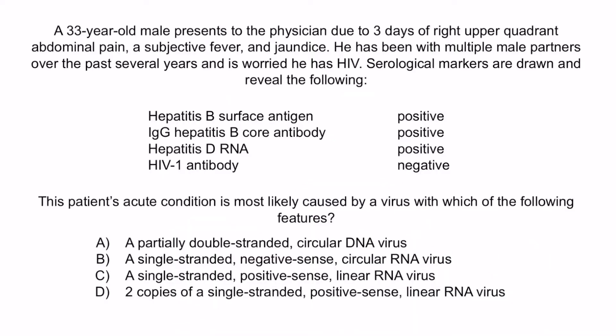A is true of hepatitis B virus, but the patient's acute condition is caused by hepatitis D virus, not HBV, so A is incorrect. C is true of hepatitis A virus; however, this is not sexually transmitted and would not present with the lab findings in the question stem, so C is incorrect. Finally, D is true of HIV; however, the HIV-1 antibody test was negative, so this patient does not have HIV. The correct answer is B: a single-stranded negative sense circular RNA virus.